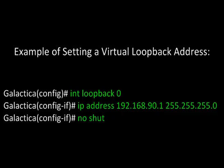Here's an example of setting a virtual loopback address. From within global configuration mode, specify an interface and select loopback 0. Specify the IP address just as you would for any other interface, and then activate it with the no shutdown command. This interface is virtual, it's not real, but you can specify it as the highest IP on the router and it will use that as the ID.